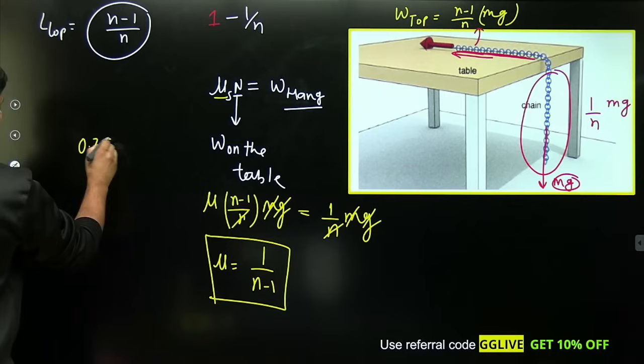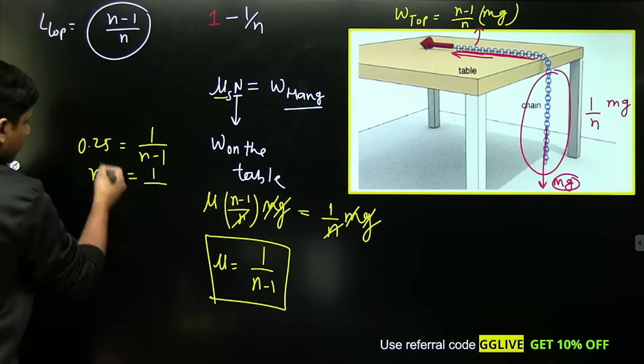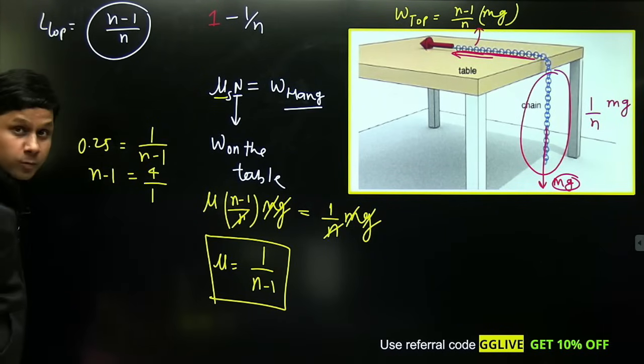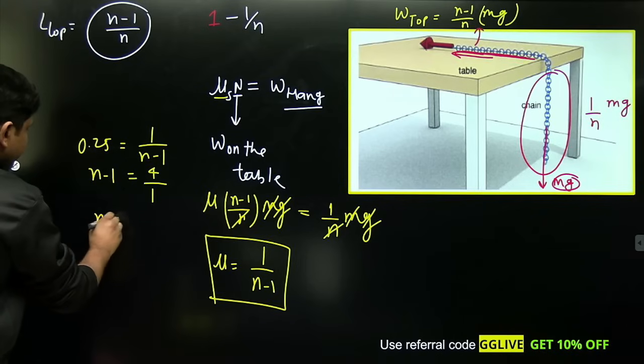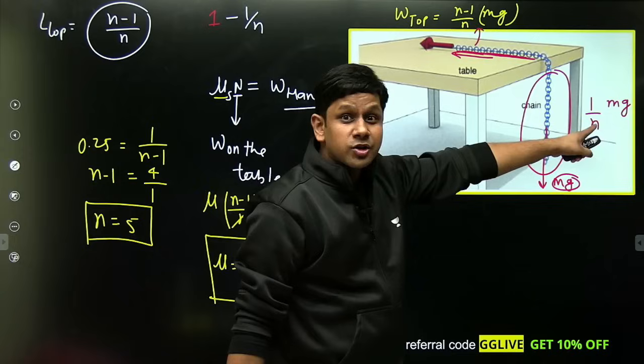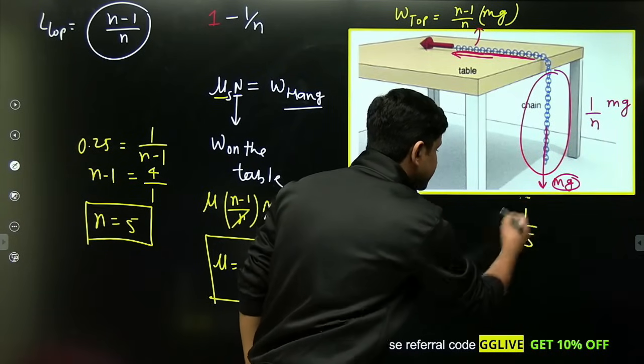The answer will be 1/(n-1), meaning n-1 = 1/0.25. Since 0.25 is 1/4, so 4 comes up, and from here you get n = 5. The value of n is 5, meaning what fraction will hang? Put 5 in place of n: 1/5 is the answer.